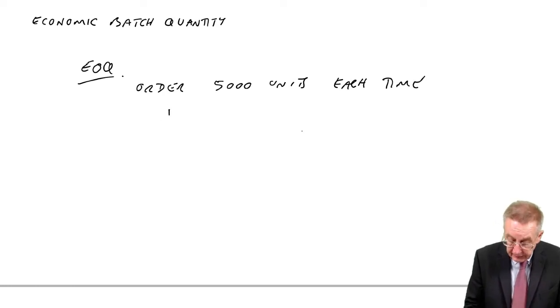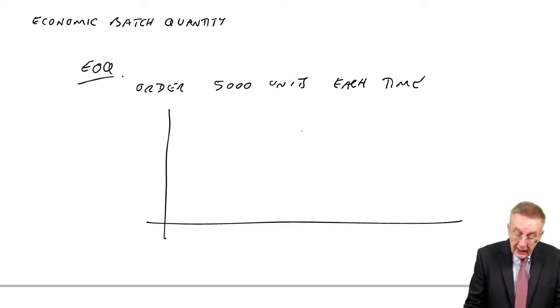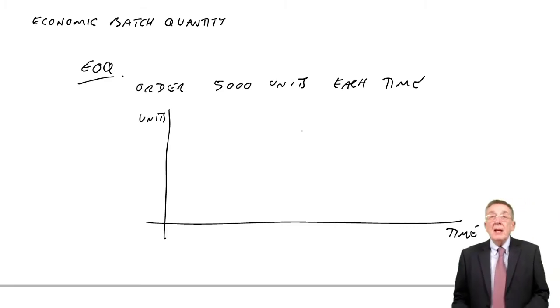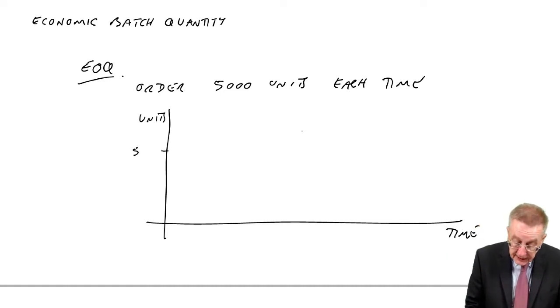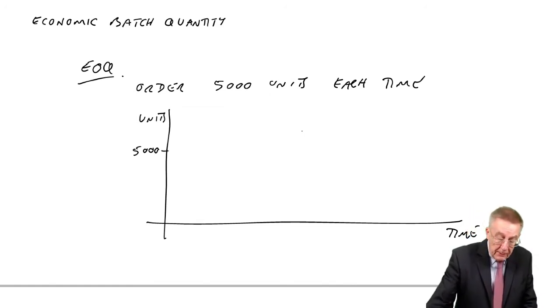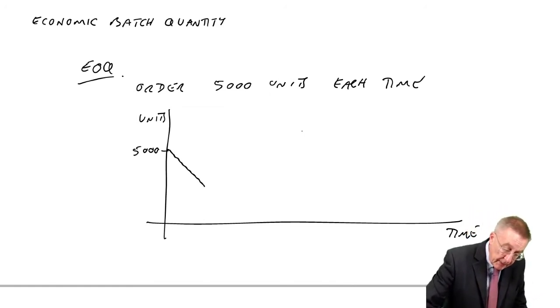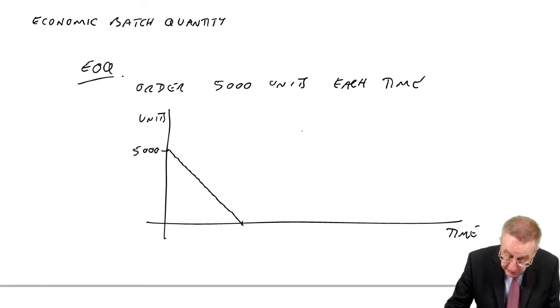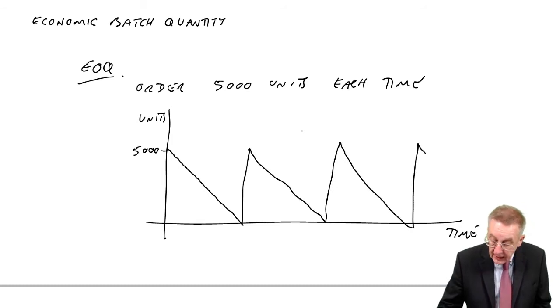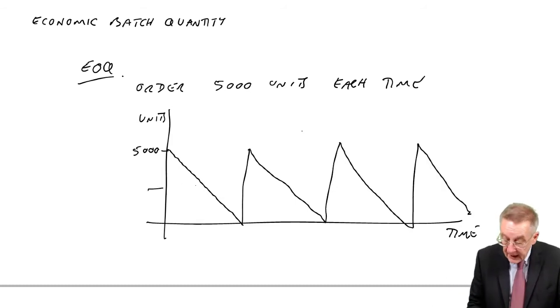I drew a little graph, and I said that what's going to happen if we have the units over time? I said we'd start the year with 5,000 units in inventory. Those would last us a period. Gradually, we'd use them up and the inventory would fall to zero. But you keep going between 5,000 and zero, and the average inventory would be 2,500.